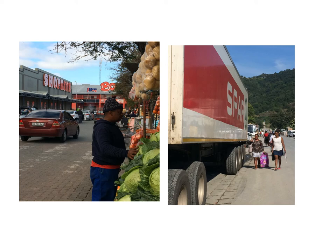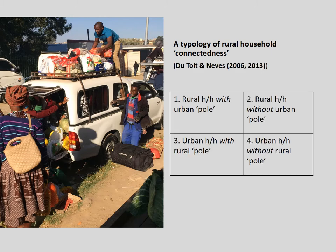We're going to look at the relationship between de-agrarianization and social differentiation. But before we do, I want to point out that rural households are not isolated — they are often profoundly connected to urban labor markets and urban-based households. A colleague and I developed a typology of rural household connectedness a number of years ago, which is schematically useful in illustrating this dynamic. We have a quadrant of four parts, each numbered.